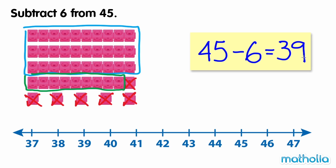We can also subtract by starting at 45 and counting back six ones: 45, 44, 43, 42, 41, 40, 39.